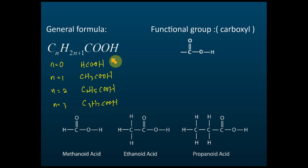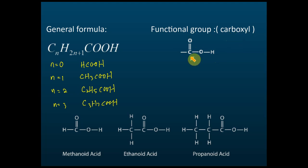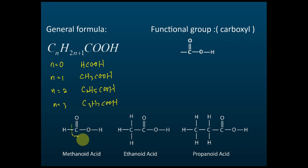The functional group is a carbon attached to one oxygen with a double bond, and another oxygen attached to an OH group. This functional group is called the carboxyl group. The first carboxylic acid, HCOOH, is called methanoic acid because it has only one carbon.